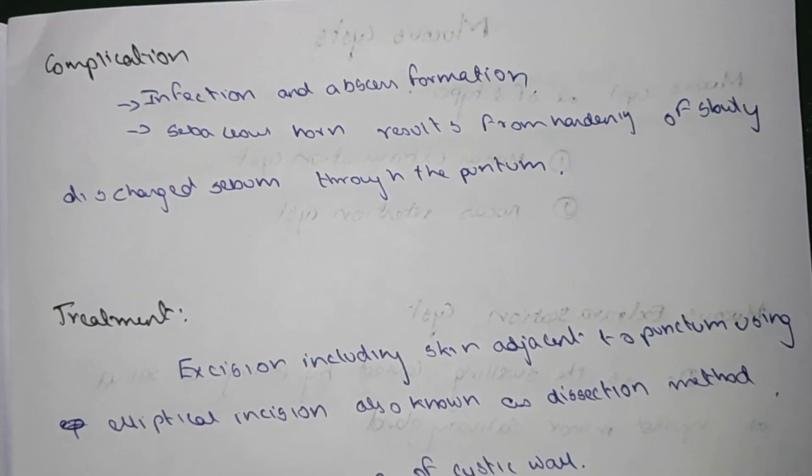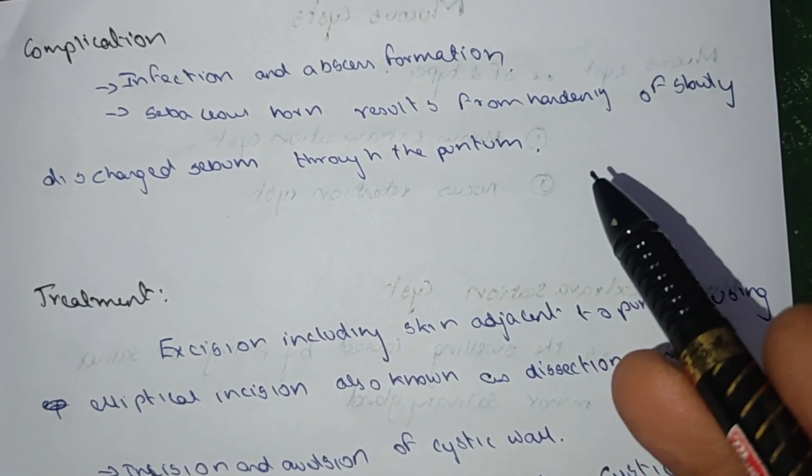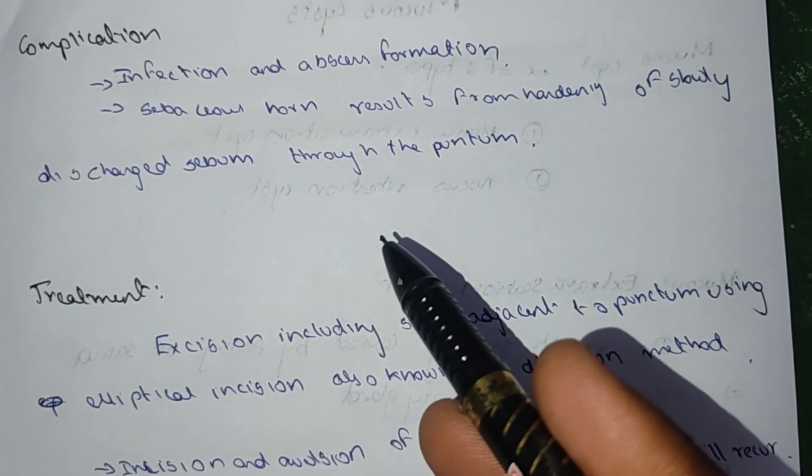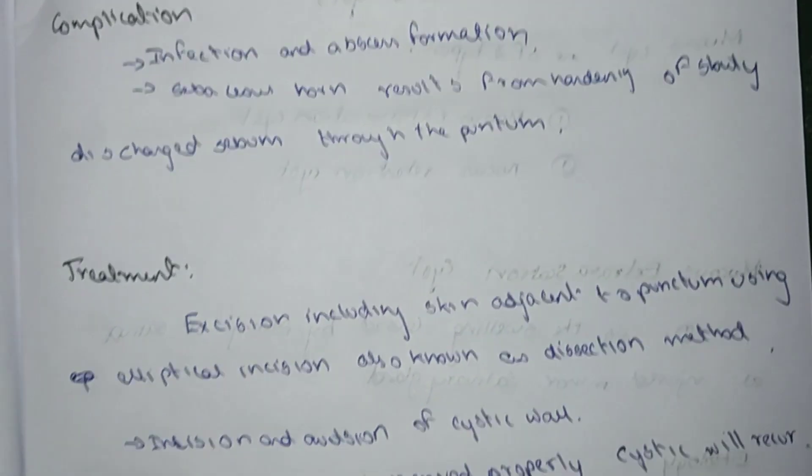Complications: infection and abscess formation. Sebaceous horn resulting in the hardening and slow discharge of the sebum through the punctum.